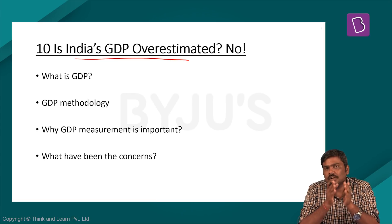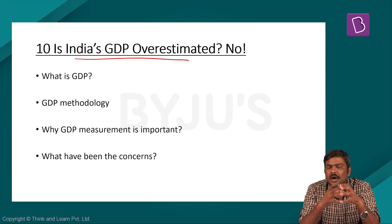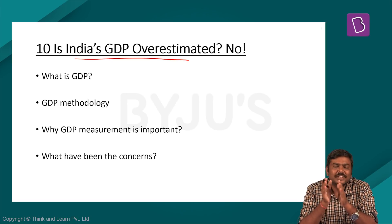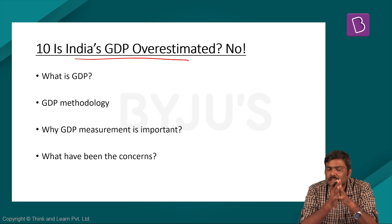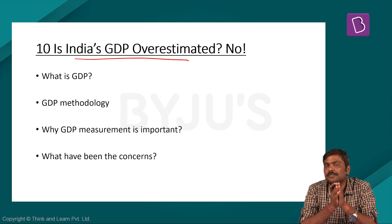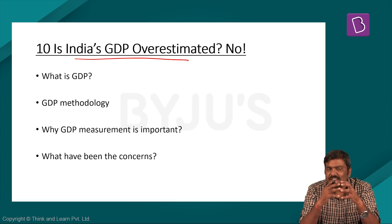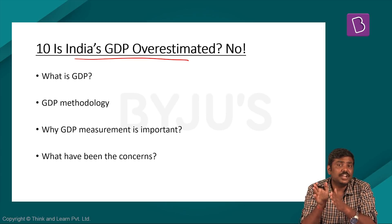GDP stands for Gross Domestic Product. For any economy, the total market value of goods and services produced in a specific time period is called GDP. For instance, in case of India, hypothetically, if in a particular financial year the market value of all goods and services produced is worth 2 trillion dollars, then this is referred to as the Gross Domestic Product or GDP.